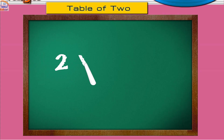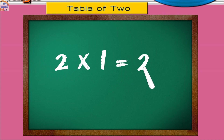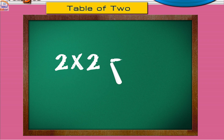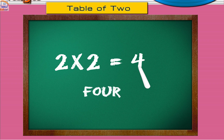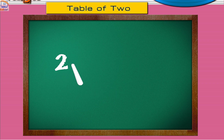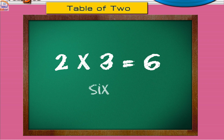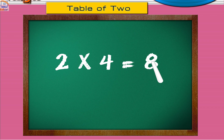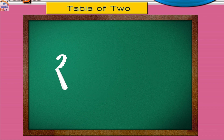Two ones are two. Two twos are four. Two threes are six. Two fours are eight. Two fives are ten.